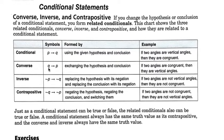Converse switches it, if Q, then P. The inverse is not P, then not Q. So you're taking the nots and putting them in for the original conditional.